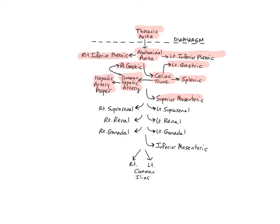The next three sets of arteries are paired branches off the abdominal aorta: the right and left suprarenals or adrenals, the renals, and the gonadal arteries. There are actually several pairs of suprarenal arteries, but the middle pair is the only one to branch directly off the abdominal aorta; the others branch off the inferior phrenic and renal arteries. The term suprarenal refers to its location superior to the kidney, and renal refers to anything related to the kidneys. The right and left suprarenal arteries branch off near the level of L1 and supply the adrenal glands.